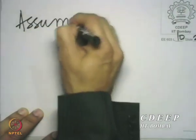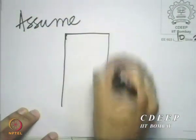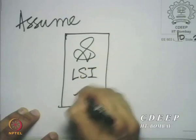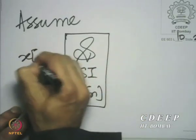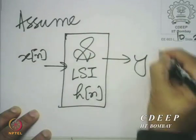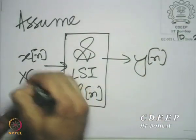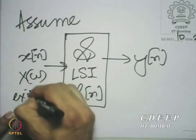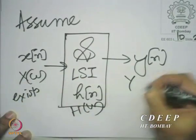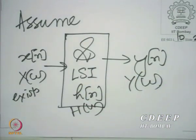Let us assume that the impulse response and the input both have a discrete time Fourier transform. We have an LSI system with impulse response H(n), input X(n), and output Y(n). We assume that X(ω) exists, H(ω) exists, and Y(ω) also exists — all of them exist. We ask: what is the relation between Y(ω), X(ω), and H(ω)?